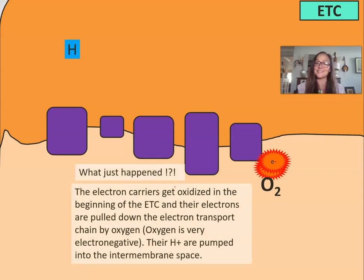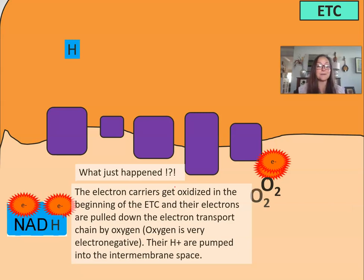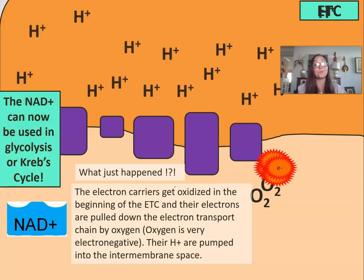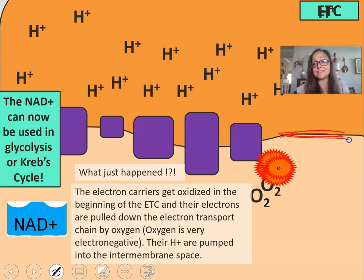When we look at this electron transport chain, the electron carriers get oxidized at the beginning and their electrons are pulled down by that very electronegative oxygen. You can see these electron carriers are oxidized while the oxygen is becoming reduced. Over time we get a proton gradient built up in this intermembrane space.